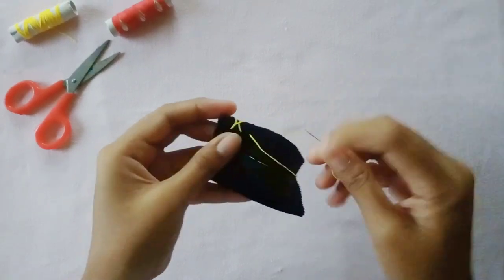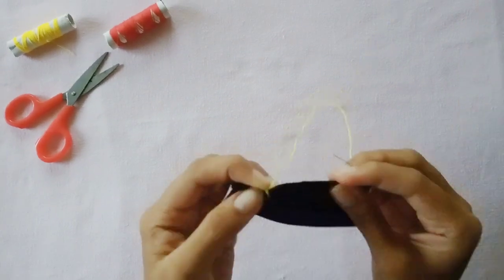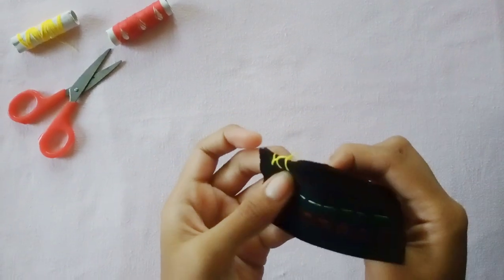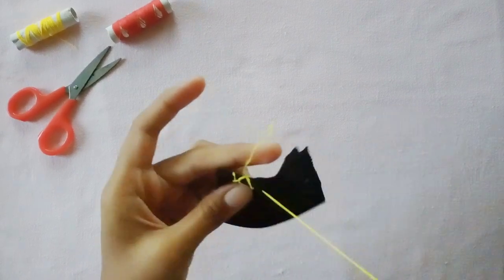Blanket stitch is most commonly used as a hemming stitch on the edge of blankets for finishing the raw edge of the fabric neatly and to prevent fraying.